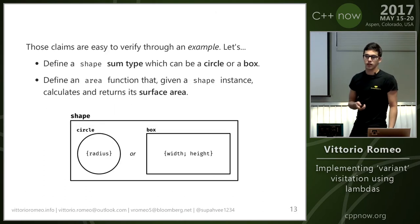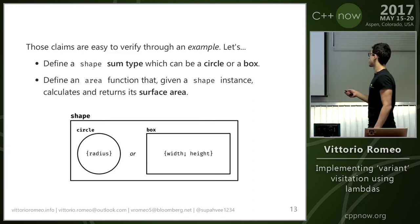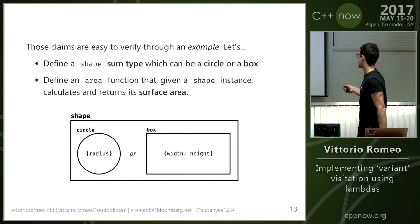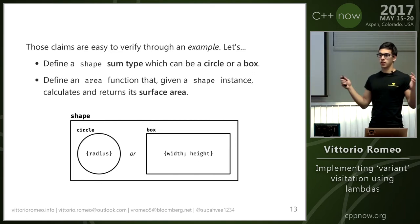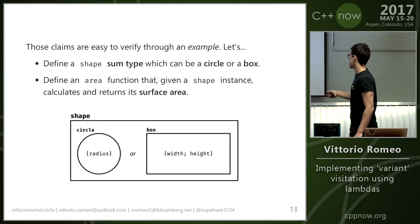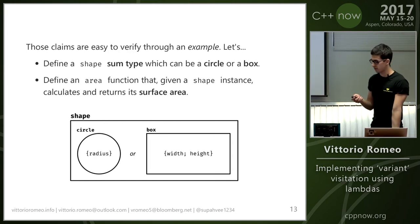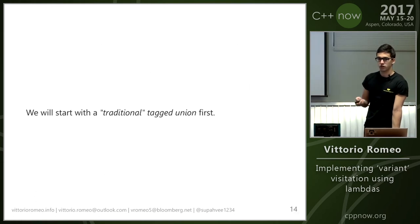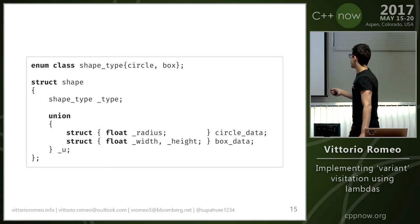I can verify these claims through a simple example. Let's define a shape sum type which can either be a circle or a box, and define an area function that given a shape calculates and returns the surface area. We're storing everything inside a variant — the shape can be either a circle with a radius or a box with a width and height. The area function needs to check what kind of thing is actually in the shape and perform a different calculation depending on the active alternative.